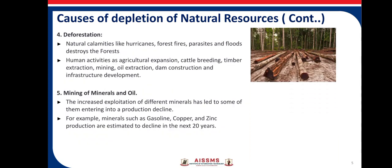The fourth cause of deflection of natural resources is deforestation. Natural calamities like hurricanes, forest fires, parasites, and floods can destroy forests. Also, the major reason for deforestation is human activities such as agriculture expansion, cattle breeding, timber extraction, mining, oil extraction, dam construction, and infrastructure development.